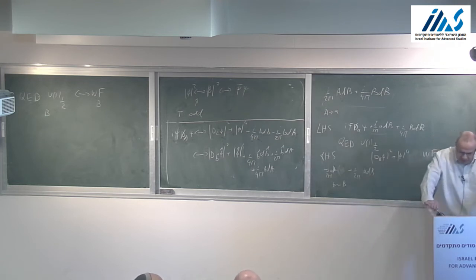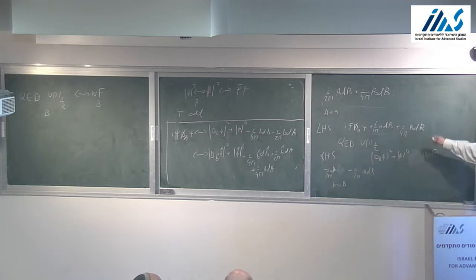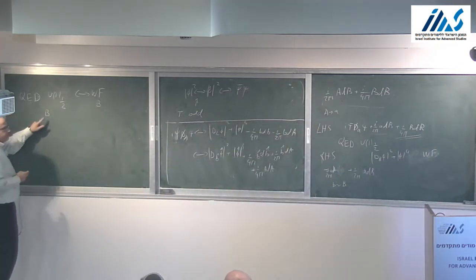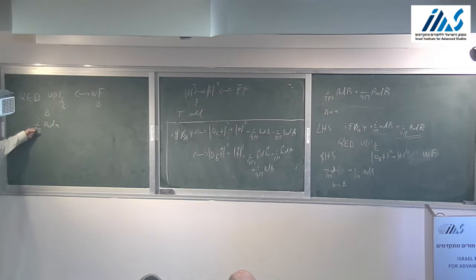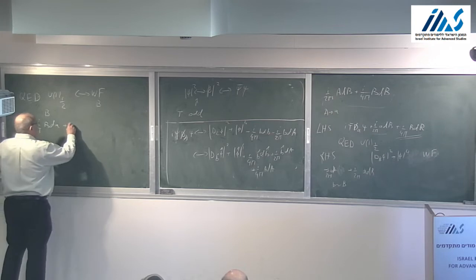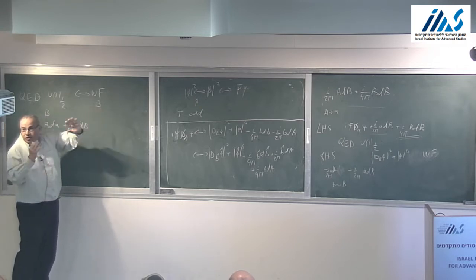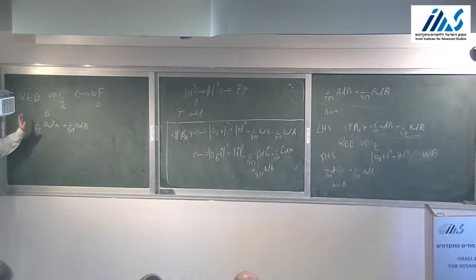We talked about time reversal invariance and said that at long distances this theory has time reversal symmetry that acts correctly with the correct anomaly needed with background field B. Absolutely crucial in this map is the BDB term. When we look at QED with level one-half coupled to background B, we have I over 2 pi B dA — that's obvious, it's the global U(1) symmetry — but we must also add I over 4 pi B dB. We have to add such a counter term to match the right-hand side and to make the theory independent of spin structure. All these things hang together and all the coefficients are what they need to be.